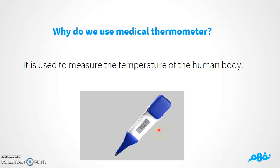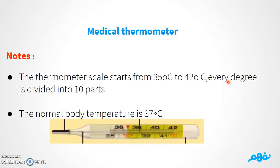Why do we use a medical thermometer? We use it to measure the temperature of the human body. The thermometer scale runs from 35 up to 42 degrees. Every degree is divided into 10 parts, as you can see — there are 10 parts between 35 and 36. So the thermometer scale starts at 35 and goes up to 42, with each degree divided into 10 parts.